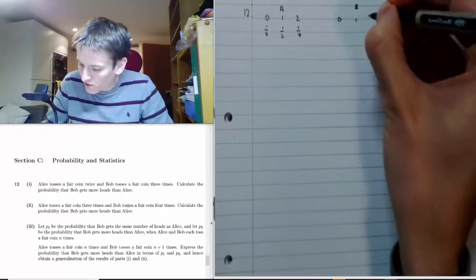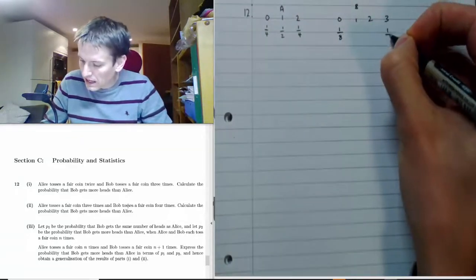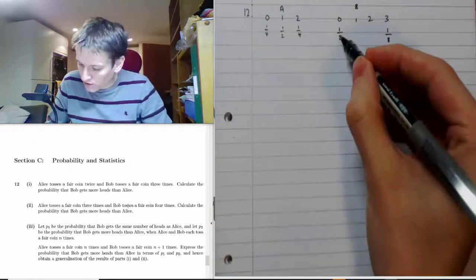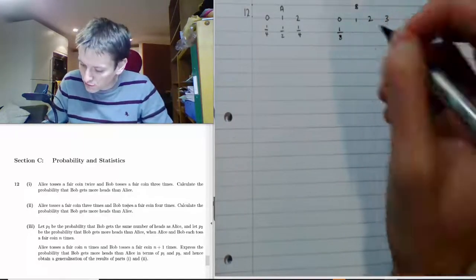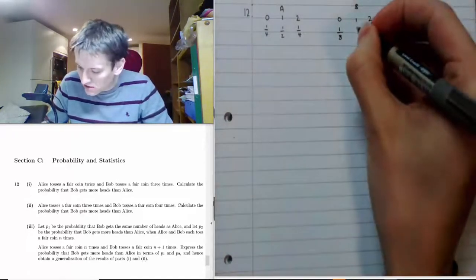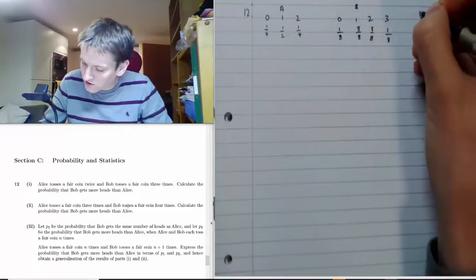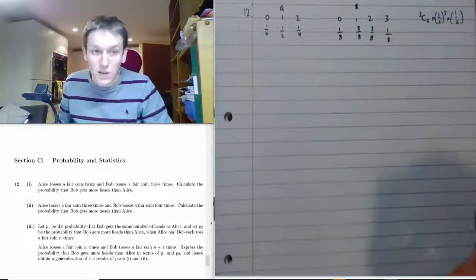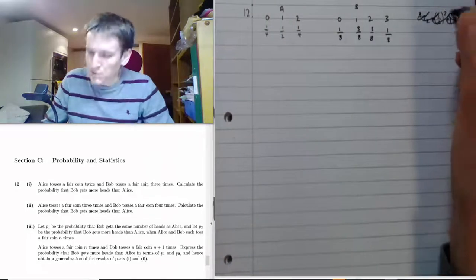A quarter chance of two heads, and that must leave one half for one head — or it's two times a half times a half. For Bob, we've got zero, one, two or three. All three being tails would be one eighth; all three being heads would also be one eighth. By symmetry, we've got three quarters left, and the probability of one head equals the probability of two heads by symmetry, so these are both three eighths.